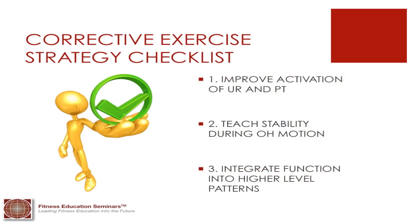So what's our corrective exercise strategy checklist? Number one, we want to improve activation of the upward rotators and the posterior tilters of the scapula — specifically the upper trap, lower trap, and serratus anterior, the force couple of those three muscles. We want to teach stability during overhead motion — specifically, how to activate those upward rotators and posterior tilters, and then teach the client how to dissociate the glenohumeral joint from the scapula as they perform overhead motion.